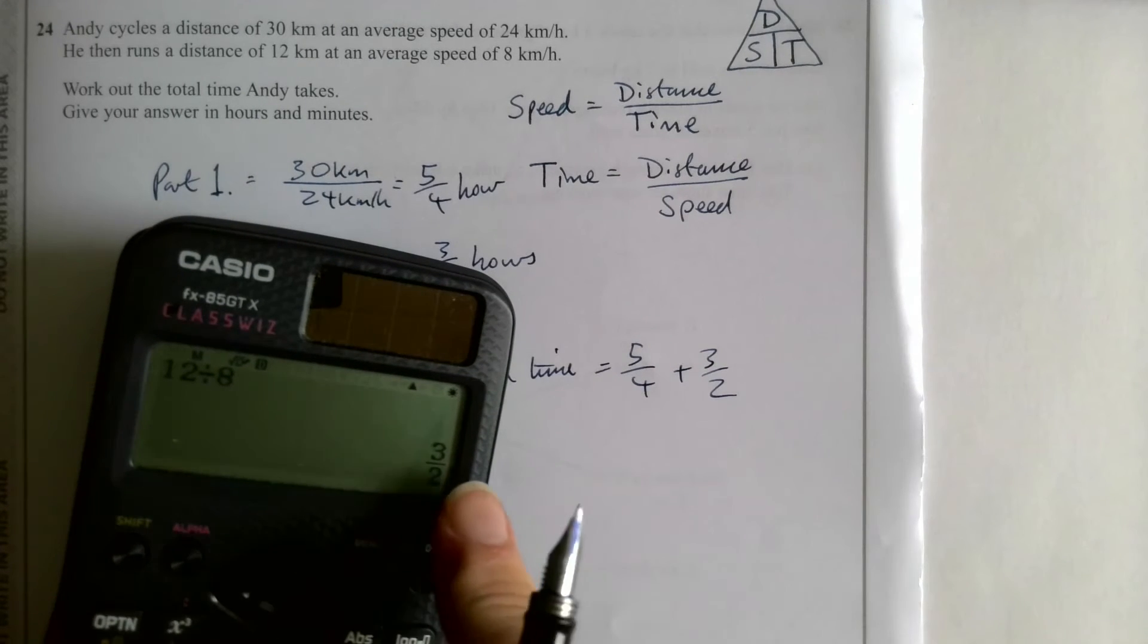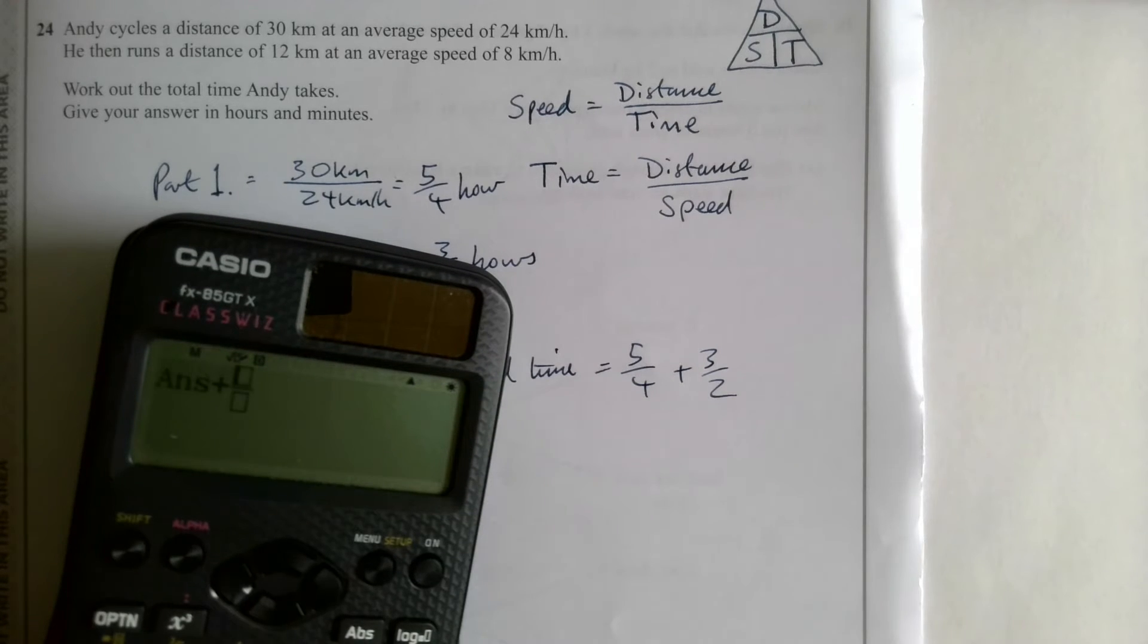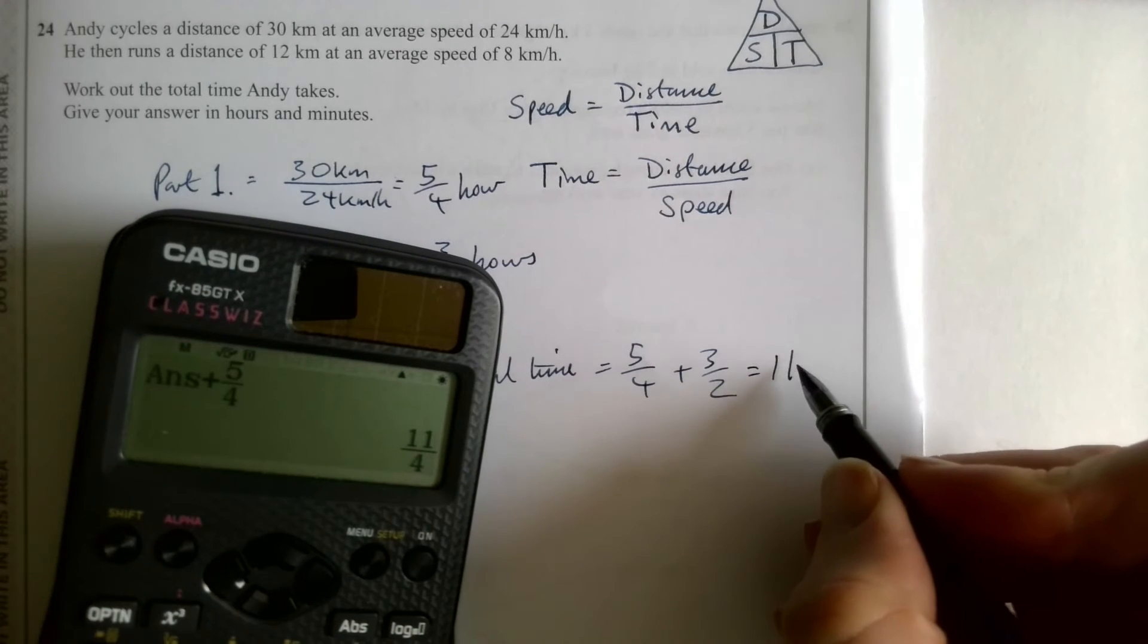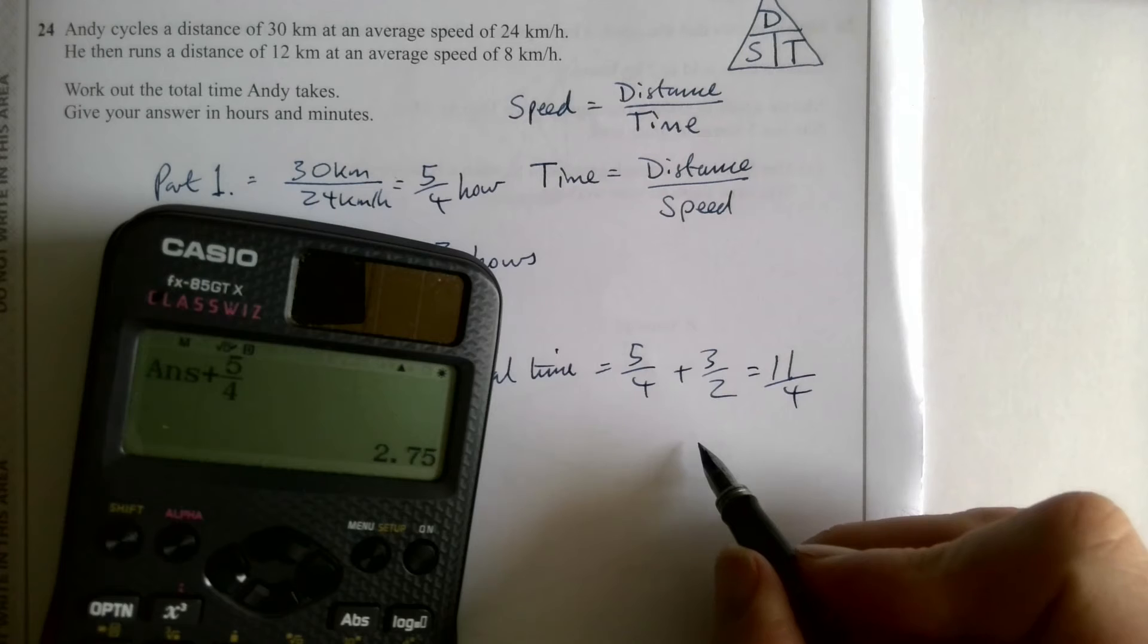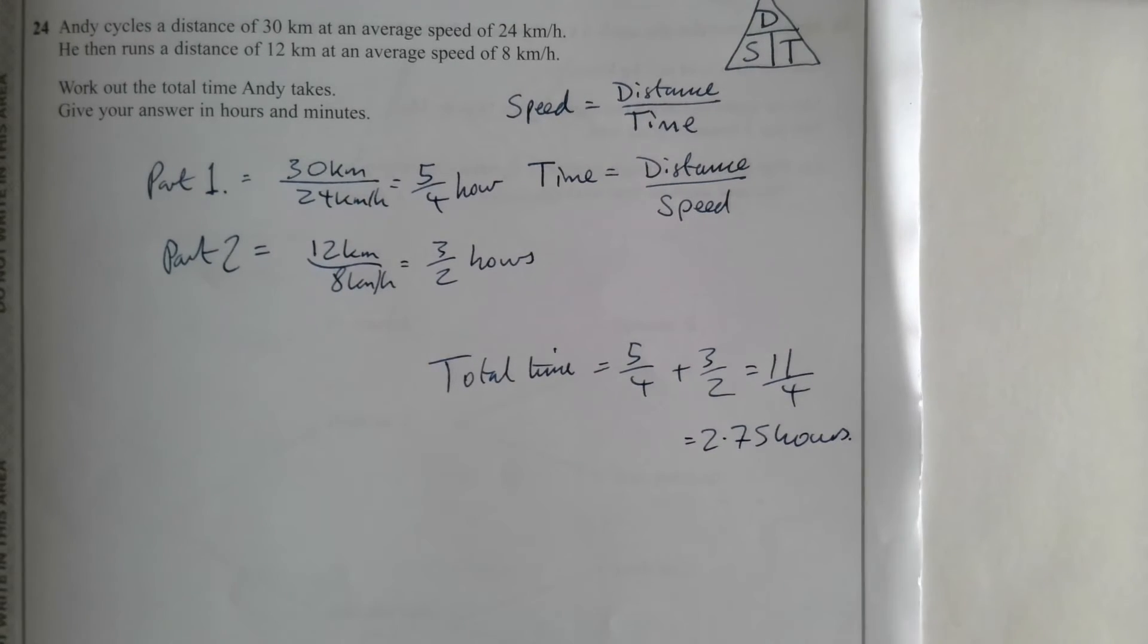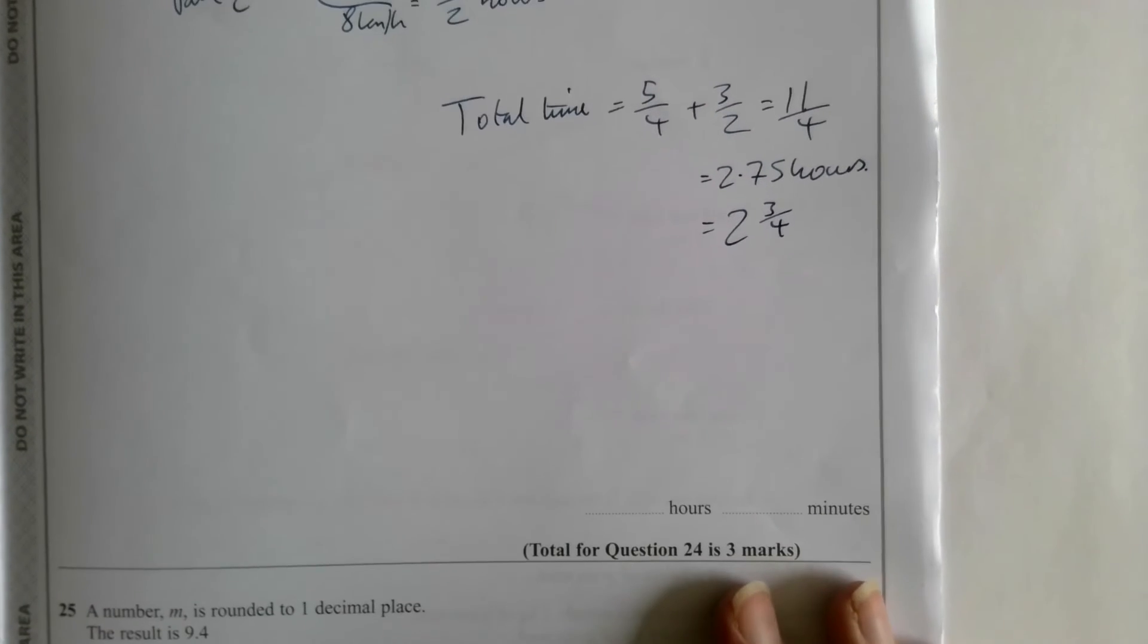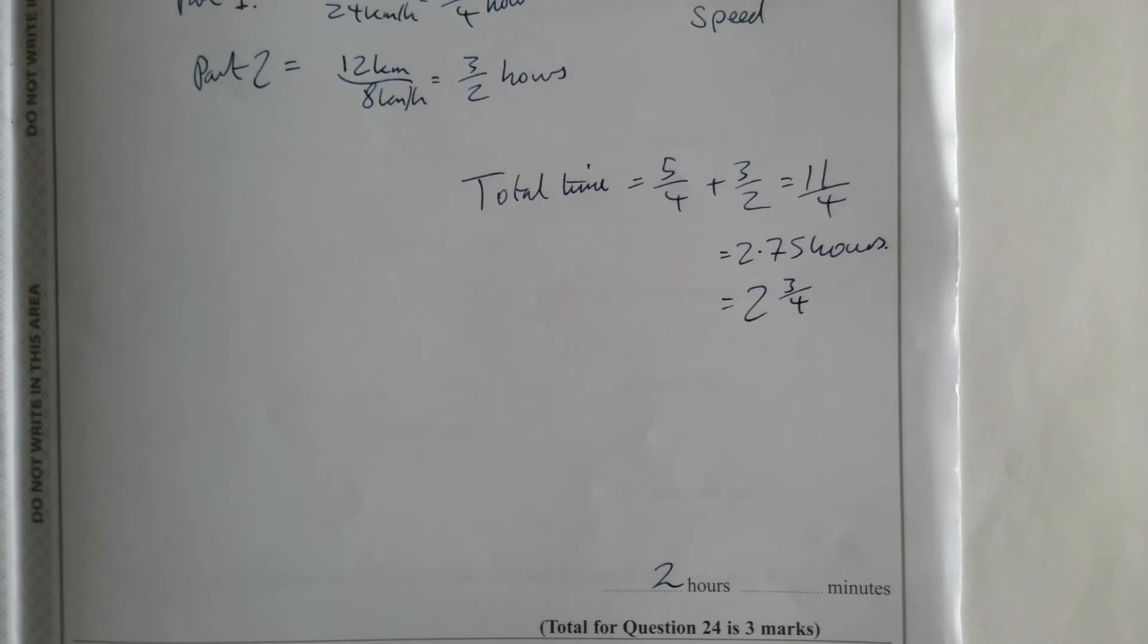Part 2 is going to be 12 kilometers at a speed of 8 kmh. While 12 divided by 8 is 3 over 2 hours. So the total time is going to be 5 quarters plus 3 over 2. Well we can do this in here. In fact, I've already got 3 over 2. If I press plus, you see it says answer. That means it's using the answer that we just had. 5 over 4 equals, and it's telling me 11 over 4. If I press S to D, that is 2.75 hours. But you can't have 75 minutes in an hour, do you? We know that that's 2 and 3 quarter hours, don't we? Now it wants the answer in hours and minutes. So a quarter of an hour is 15 minutes, 3 quarters of an hour is 45 minutes.